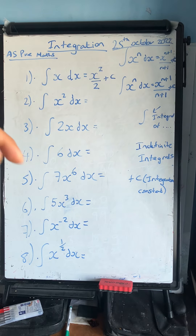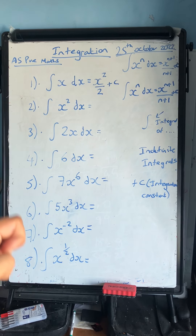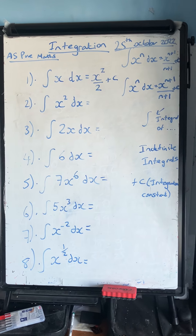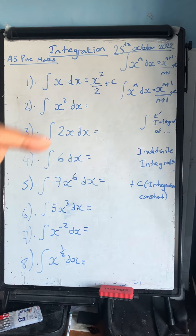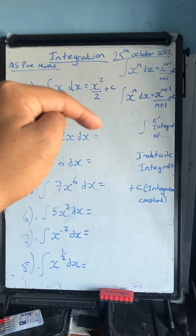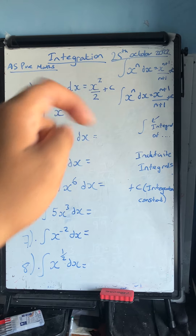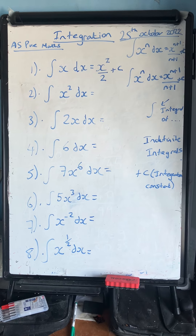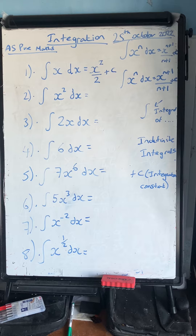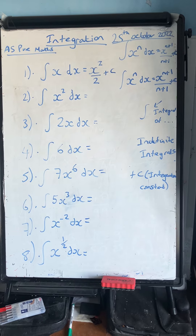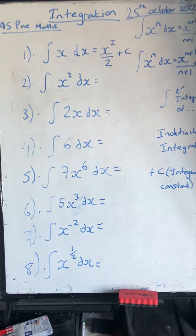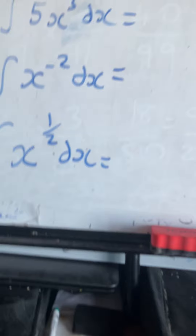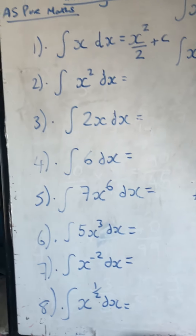Question 2: the integral of x squared dx. Adding 1 to the power and dividing by the new power gives x cubed over 3 plus c, or equivalently one third x cubed plus c.